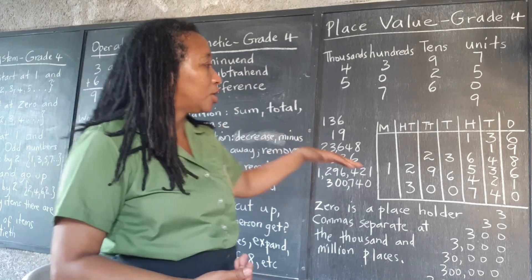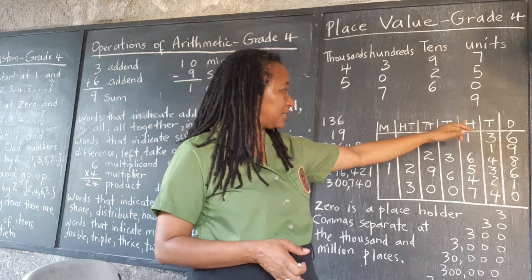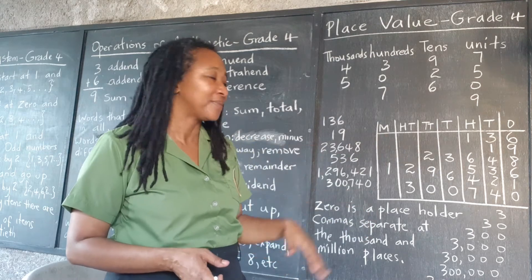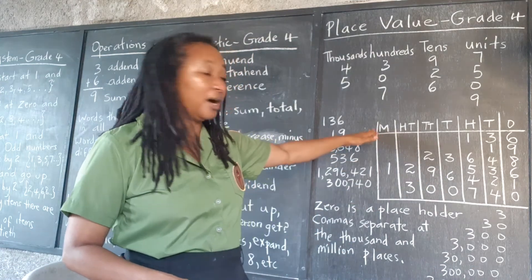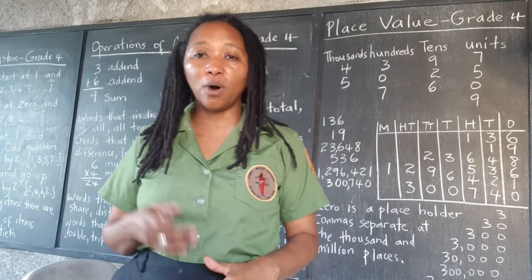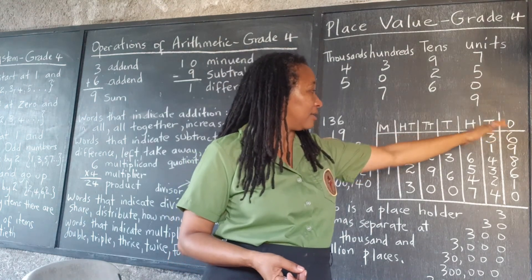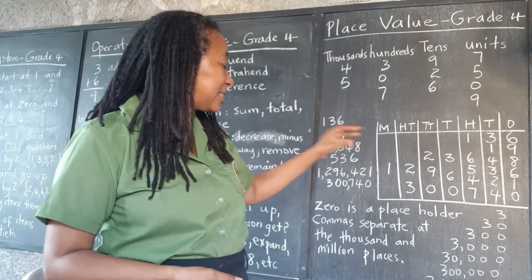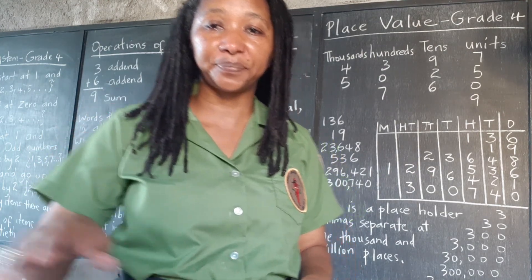So to recap: we have units, tens, hundreds, thousands, ten-thousands, hundred-thousands, and millions. Remember, this is not where it ends — it goes on and on. Right now we want to make sure we master from the units to the millions. Remember to practice: get a bunch of numbers and practice filling them in until you have mastered it. I'll see you next time.